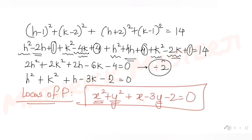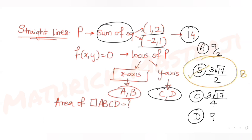The area of quadrilateral ABCD is 3√17/2, which matches answer choice B. This is the correct answer. I hope you understood how to solve this type of question. I'll see you tomorrow with another question from JEE Mains. Please like, subscribe, and share these videos with friends preparing for JEE. Thank you.